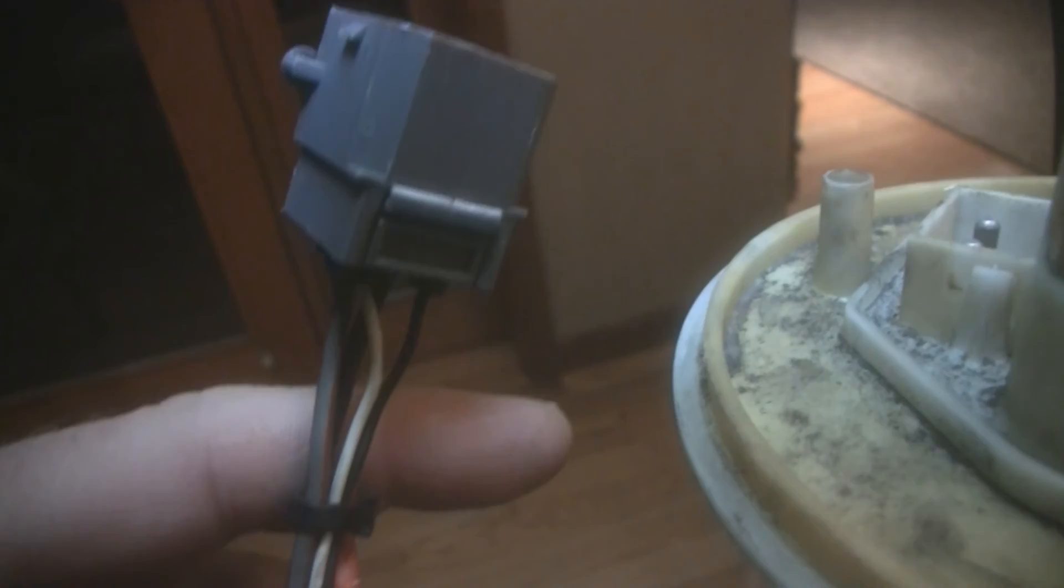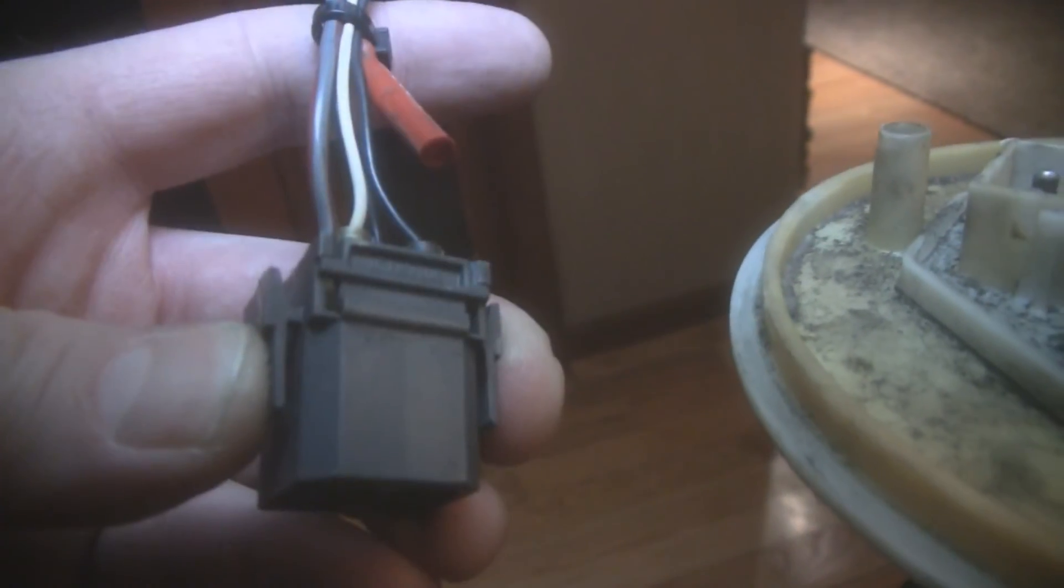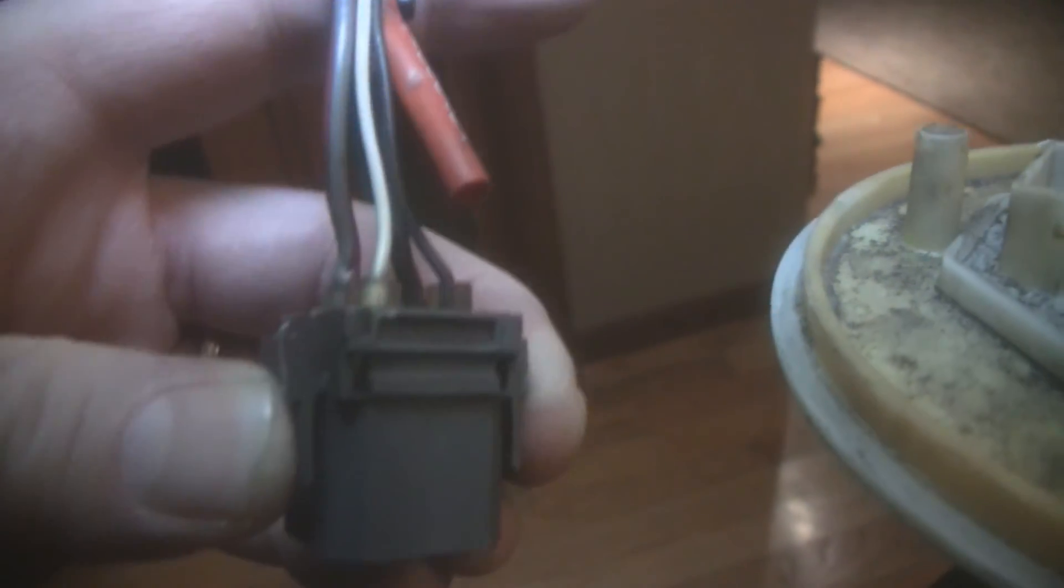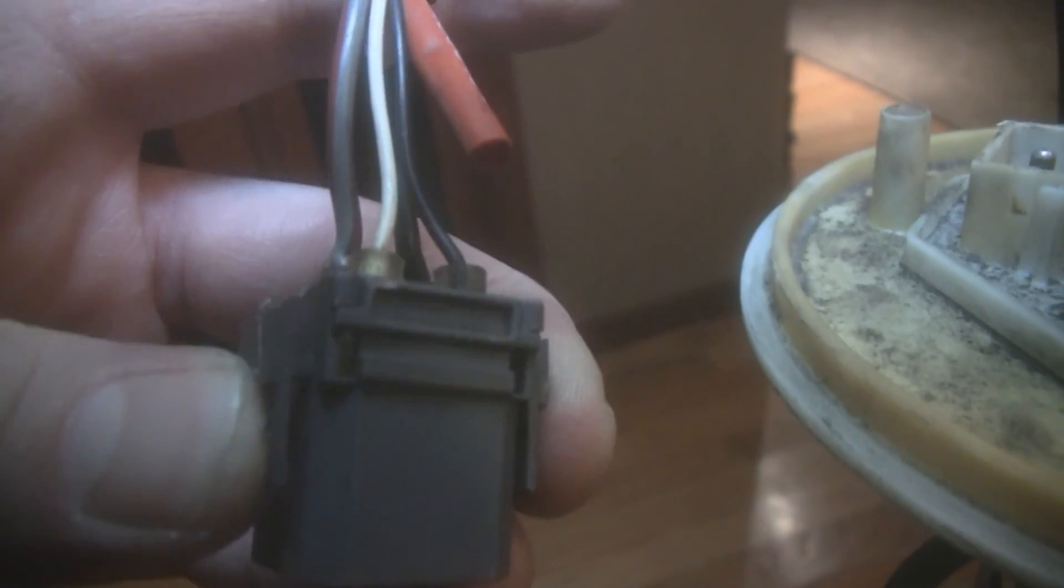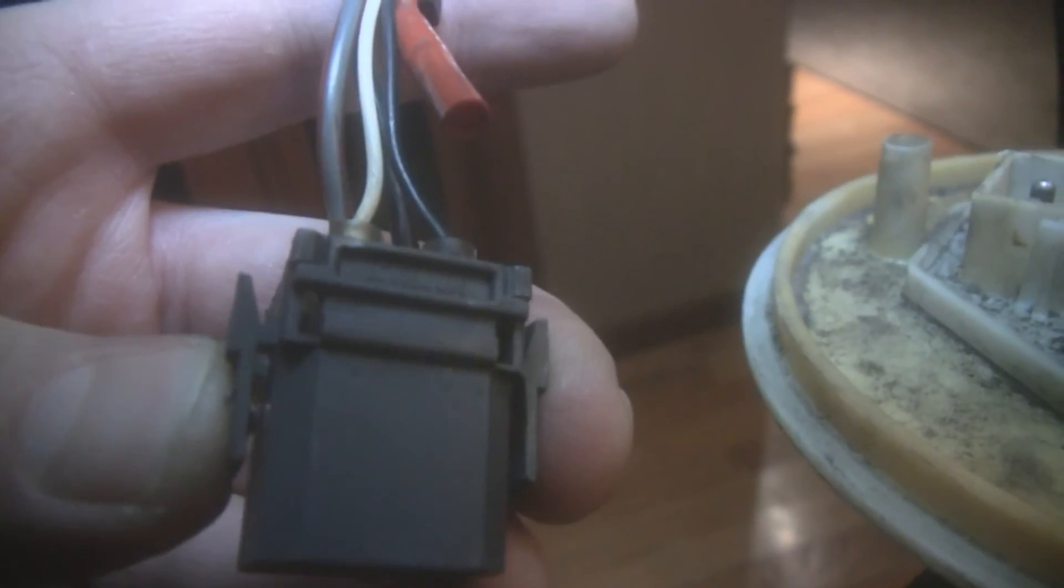The wires on the outside that you would use to measure if the fuel pump was installed in the car are different colors than the wires beneath. The ones you'd want to measure the resistance across are the black and white thinner gauge wires.